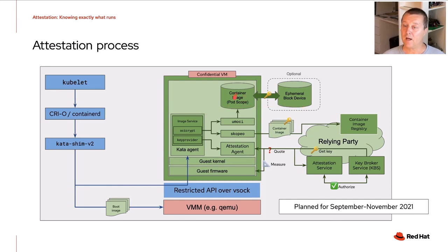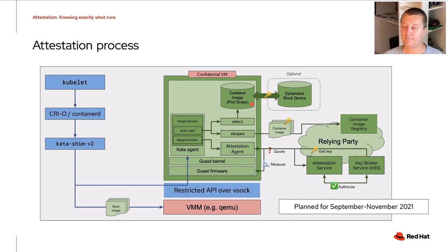Container images are now pod-scoped and can't be shared across pods. Initially we'll use a RAM disk for that, but since encrypted memory is a precious resource, as soon as possible we'll try to store it to disk to free memory for other uses. That work is planned for the last quarter of 2021.